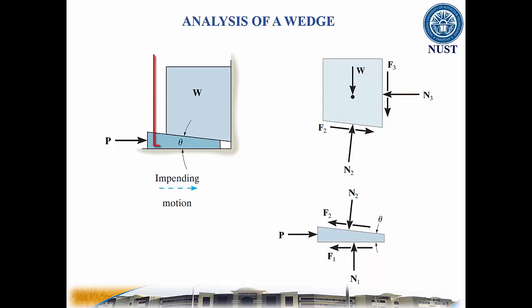Next, a free body diagram of the object on top of the wedge is drawn. Please note that at the contacting surfaces between the wedge and the object, the forces are equal in magnitude and opposite in direction to those on the wedge, and all other forces acting on the object should be shown.